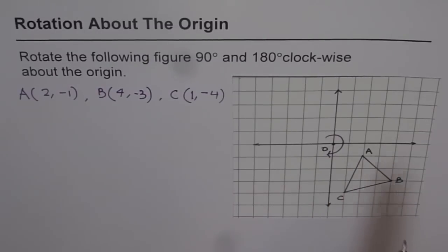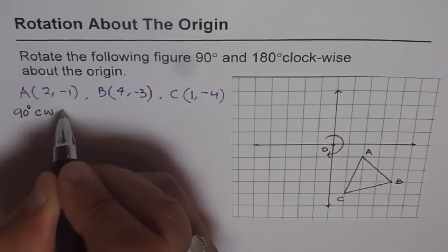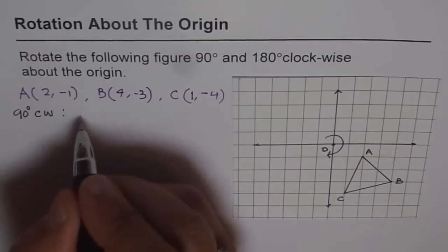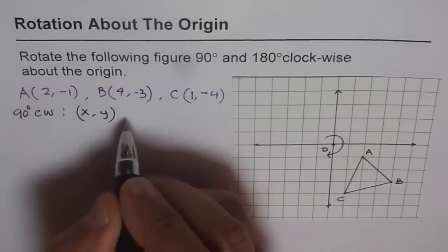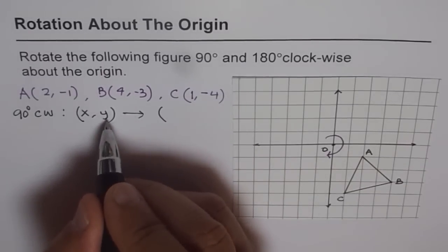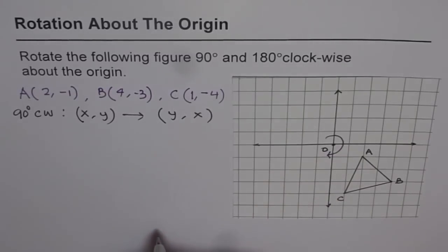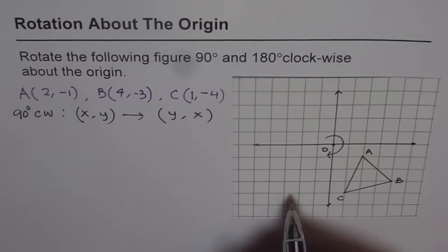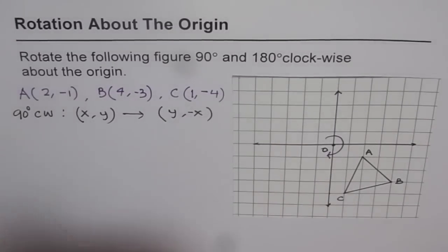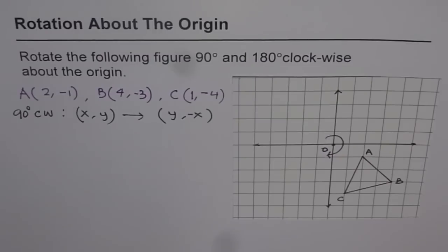Now if we rotate them 90 degrees clockwise, what will be the position? Whenever you do a 90 degrees clockwise rotation, the X and Y points get changed. The change is that they swap — Y becomes X and X becomes Y. And the second thing is, whenever you do a clockwise rotation, the sign for Y changes. So that is how the transformation works.